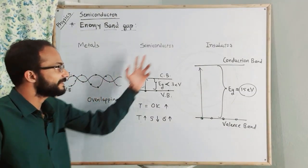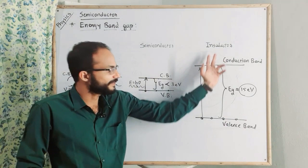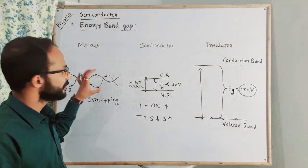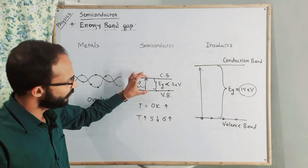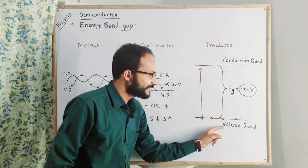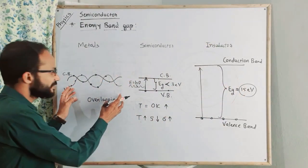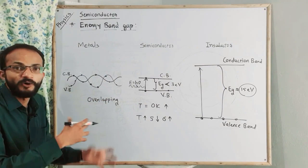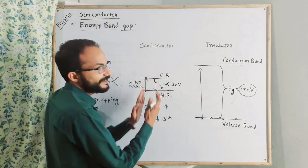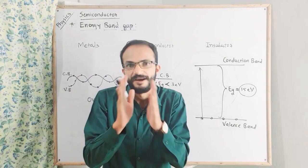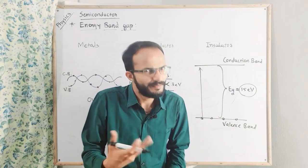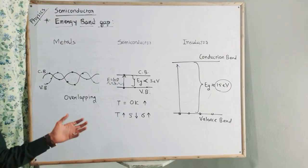This is the concept of the energy band gap theory — for the metal, the semiconductor, and the insulator. In metal, there is an overlapping band gap. In a semiconductor, the band gap is small, allowing current flow when energy is supplied. I will tell you more about the definition of the energy band gap.